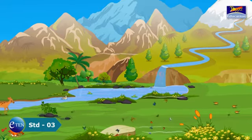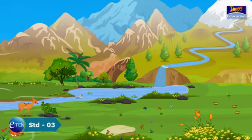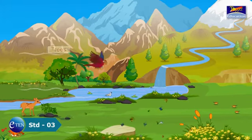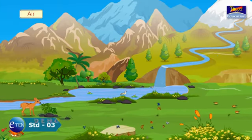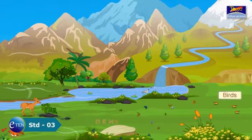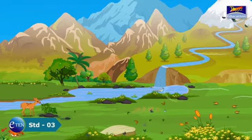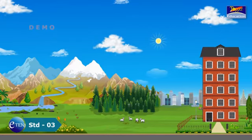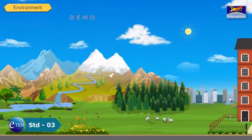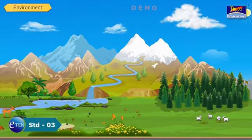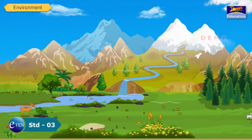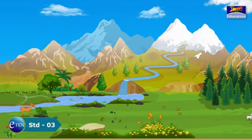When we look around the place we live in, we see land, trees, air, water, birds, animals and buildings. Everything that surrounds living things is called environment. Both living and non-living things are a part of our environment.